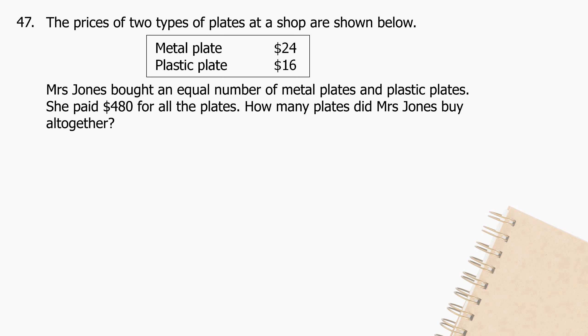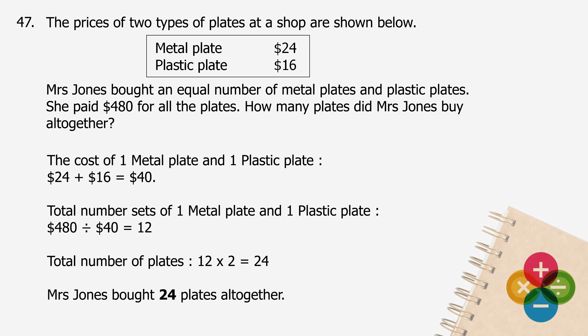Question 47: The prices of two types of plates at a shop are shown below. Mrs. Jones bought an equal number of metal plates and plastic plates, and paid $480 for all the plates. How many plates did Mrs. Jones buy altogether? The cost of one metal plate and one plastic plate will be $24 plus $16 equals $40. The total number of sets will be $480 divided by $40 equals 12. The total number of plates will be 12 multiplied by 2 equals 24. Mrs. Jones bought 24 plates altogether.